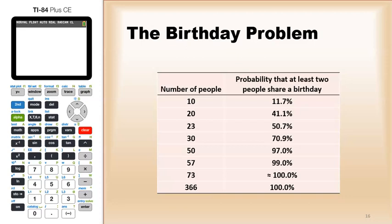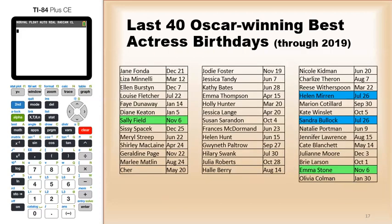For an example, here's the last 40 Oscar-winning Best Actresses with their birthdays. You see there's actually two pairs: Sally Field and Emma Stone both have a birthday on November 6, and Sandra Bullock and Helen Mirren both have July 26. For 40 people, the probability would have been 89%, and that's certainly the case here.